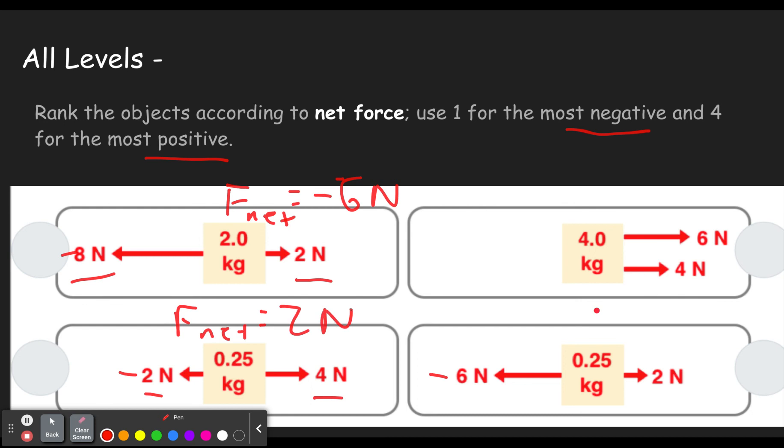Here these are both going the same way, four and six. So the net force is 10 newtons. And here we have negative six plus two. Negative six plus two gives us negative four newtons.